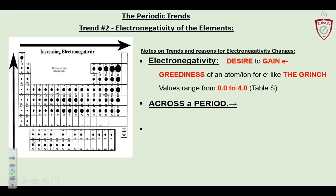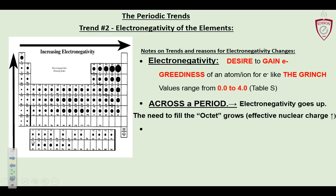As you go across a period, electronegativity increases, especially for the main group elements. The transition metals go up and then down again. For the main group elements, as you go across a period, electronegativity goes up because the need to fill the octet of electrons is growing the closer you get to the finish line. It's also related to nuclear charge increasing — as you go across a period, protons increase, kernel electron shells stay the same, and the valence shell gets pulled in closer to the nucleus. The greater the effective nuclear charge, the more likely it can reach out and steal electrons from something else.